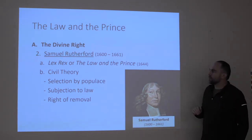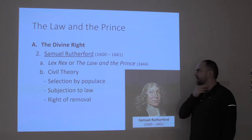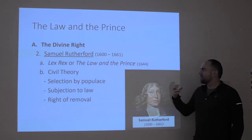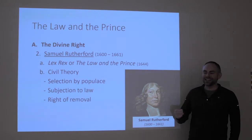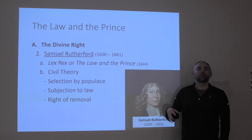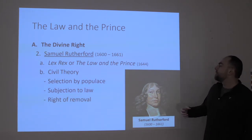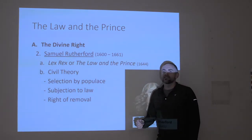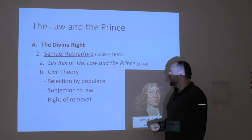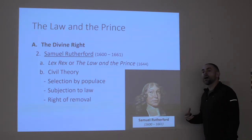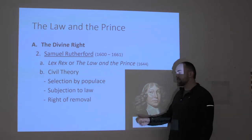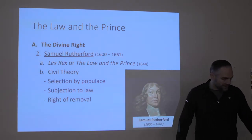Here is Rutherford's civil theory. Kings and sovereigns, civil governments, are in fact selected by a populace. A populace gives to a king his authority in one manner or another. But in so doing, it's actually the providence of God working through that populace. It's only when the populace itself is functioning with a vision of God's law undergirding their decisions and constitution that the king has a right to rule under God. Therefore, this people also has a right of removal if that king should deviate ultimately from God's law.